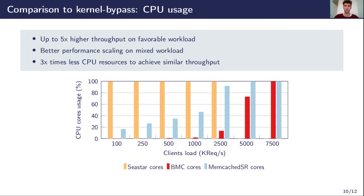We then measure the CPU usage of both configurations for different client loads, using a total of 8 CPU cores to process the workload. For Memcached SR with BMC, the CPU usage is split between the application and the network stack, including BMC. The results show that Seastar uses 100% of its CPU resources even when the load is low, because of the polling drivers used in DPDK. Preserving the Linux network model allows the CPU usage of Memcached with BMC to scale with the load. At 2.5 million requests per second, Memcached with BMC is able to process the same load as Seastar while using 3 times less CPU resources.